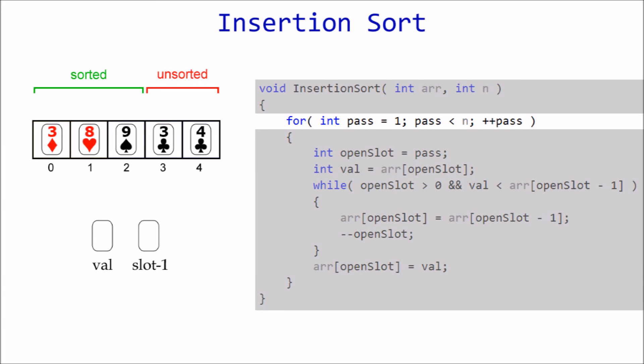Next is pass number 3. Open slot is set to index 3, value is set to the 3 of clubs, and we start comparing again. 3 is less than 9, so 9 is shifted to the right. 3 is less than 8, so 8 is also shifted to the right. 3 is not less than 3, so the 3 of clubs is inserted here.